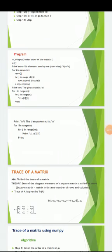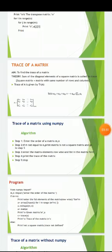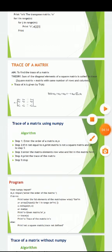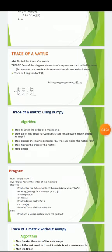This is all about transpose of a matrix with and without NumPy. Now let us learn about the trace of a matrix. The sum of diagonal elements of a square matrix is called its trace. A square matrix has the same number of rows and columns. For example, a 2x2 matrix and a 3x3 matrix are square matrices. The trace is denoted as tr(A), if A is the given matrix.